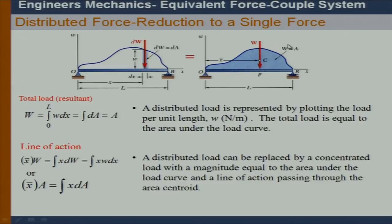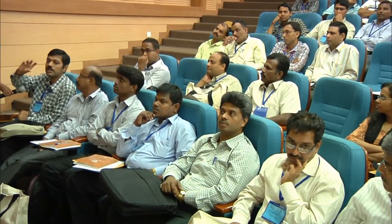For example, if I have a triangular distribution, the area of that triangle is my net resultant force, and it is applied at the centroid of that triangle. If the distribution is a function — for example in a tapered beam with varying density — then integration is required, and in that case it is through the center of mass.